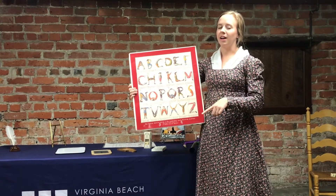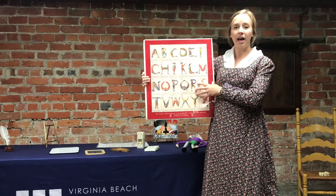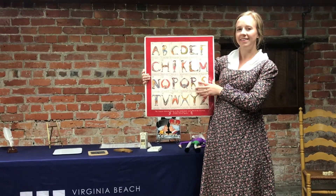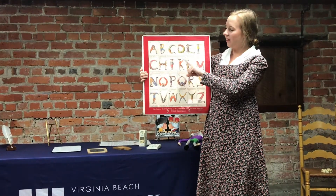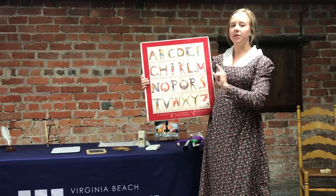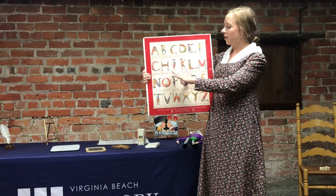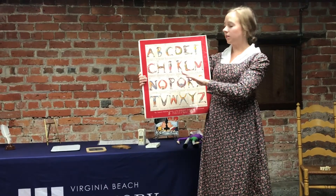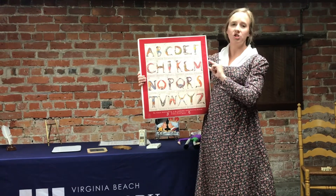I tricked you, didn't I? There are two letters that are missing from my alphabet from back then. Can you guess what they are? That's right! One of them is my J. So all of you out there with names that start with the letter J — that letter was not in the alphabet, but they still had the sound. So they used the I as a placement for the J.